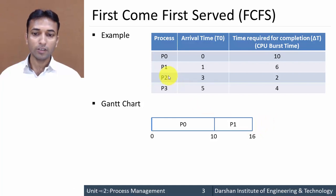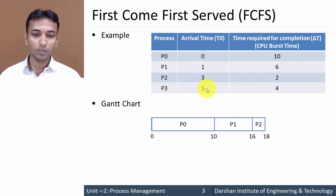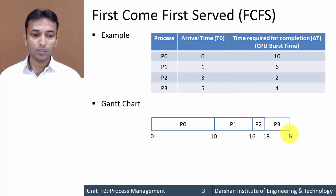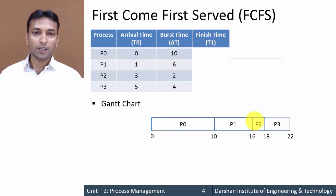P1 requires 6 seconds, so it runs from 10 to 16. Of the remaining two processes, P2 arrived first at 3 seconds, so next is P2. It requires 2 seconds, running from 16 to 18. Then the only remaining process is P3, which requires 4 milliseconds, running from 18 to 22. All processes are executed, so our Gantt chart is complete.